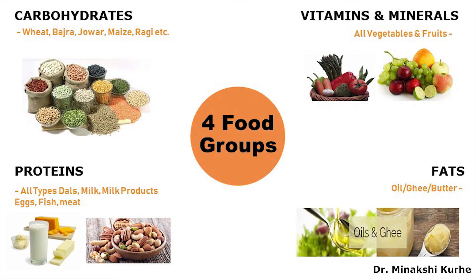First is Carbohydrates. This group includes all types of grains like wheat, bajra, jowar, maize, ragi, etc. We use these grains to make roti, bread, etc. This is a major food group which gives us energy. Diets rich in complex carbohydrates are healthier than low fiber diets based on refined and processed foods.